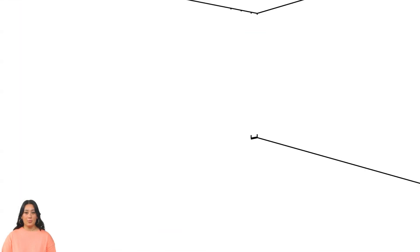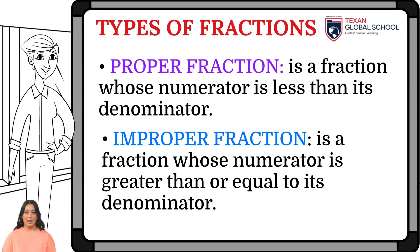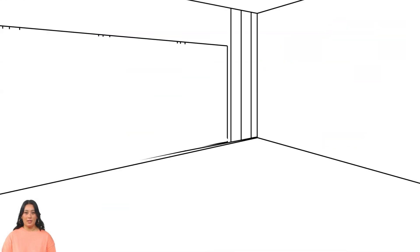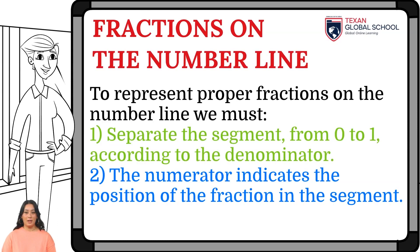Remember that proper fractions are those whose numerator is less than the denominator, and improper fractions are those in which the numerator is greater than or equal to the denominator. To locate proper fractions on the number line, we know that the quotient of the fraction will be greater than 0 and less than 1. Therefore, the process involves separating the segment from 0 to 1 according to the denominator. Then the numerator will indicate the position of the fraction on the line segment, separated into sections.